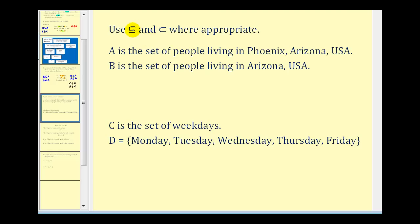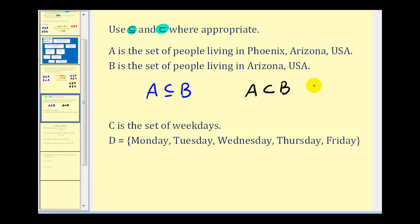Let's take a look at two more examples. We want to use either the subset symbol or the proper subset symbol when appropriate. Set A is the set of people living in Phoenix, Arizona, USA, and set B is the set of people living in Arizona. Since Phoenix, Arizona is in the state of Arizona, we could say that A is a subset of B. And since set A does not equal set B, we can say that A is also a proper subset of B. Since being a proper subset gives us more information about the two sets, the proper subset notation would be more appropriate.